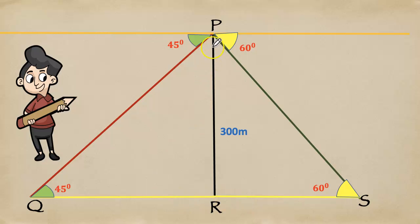We can see that the triangle PRQ and the PRS are right angle triangles. The height is 300m. The angle of elevation 45 degree here and 60 degree. So, width of the river is QS. We will find the QR and RS separately. Then, we will add QR plus RS. So, we get QS.